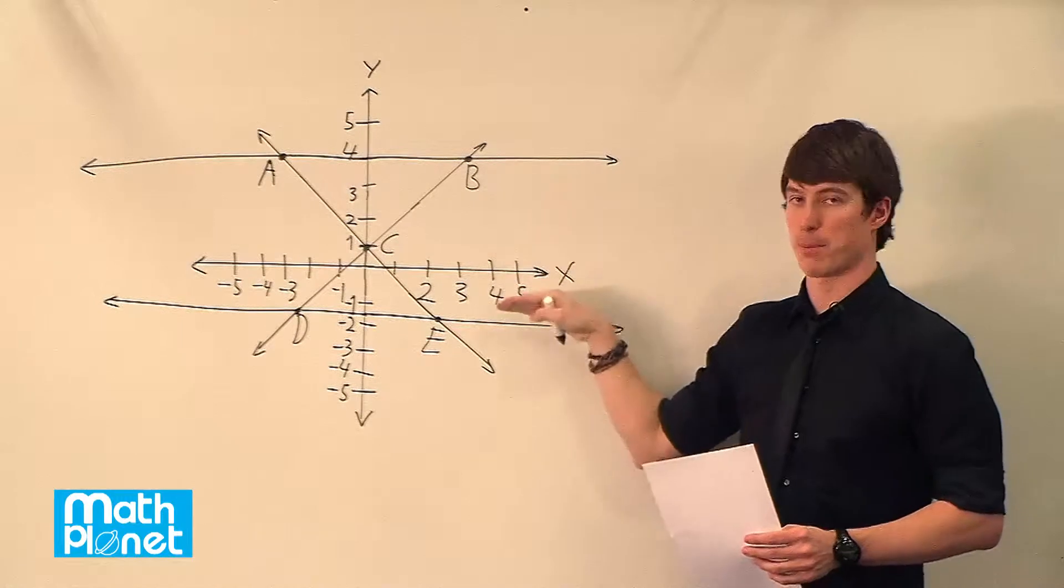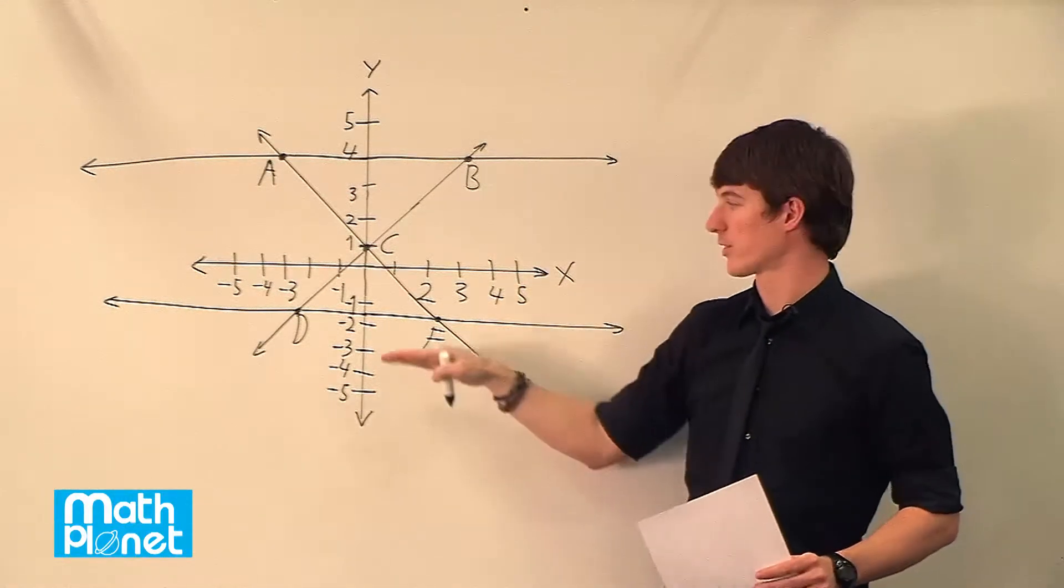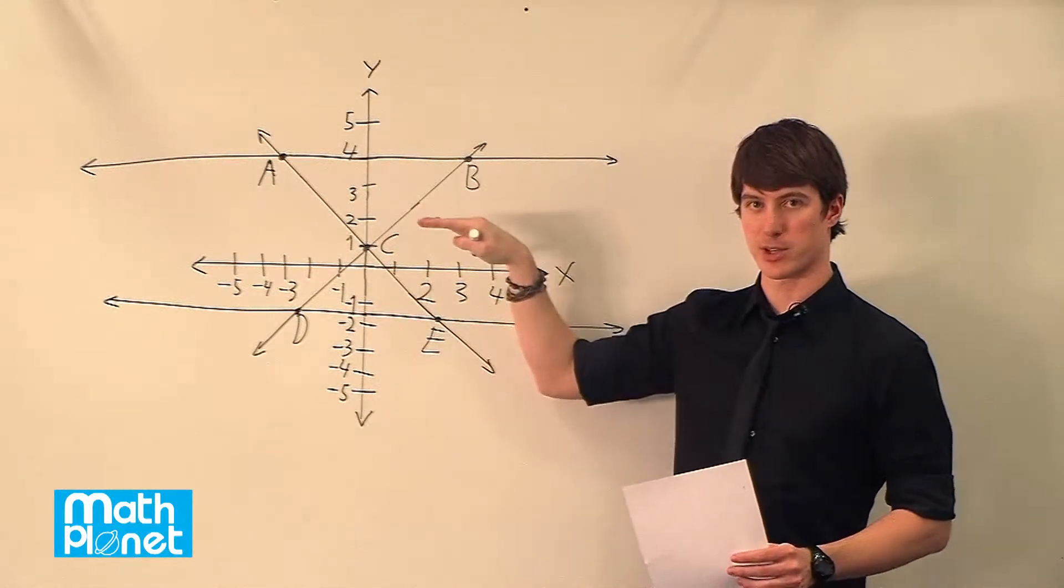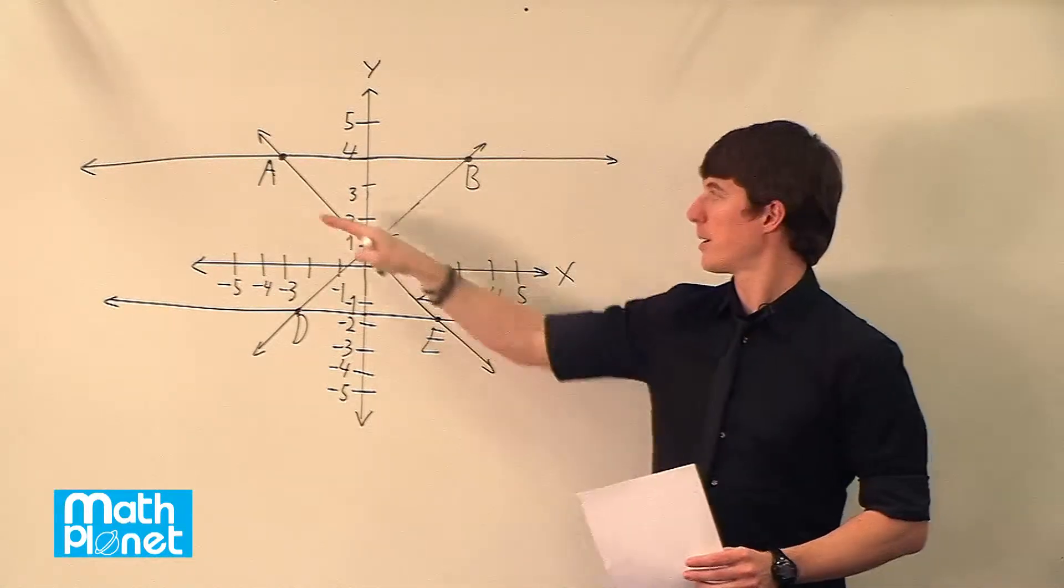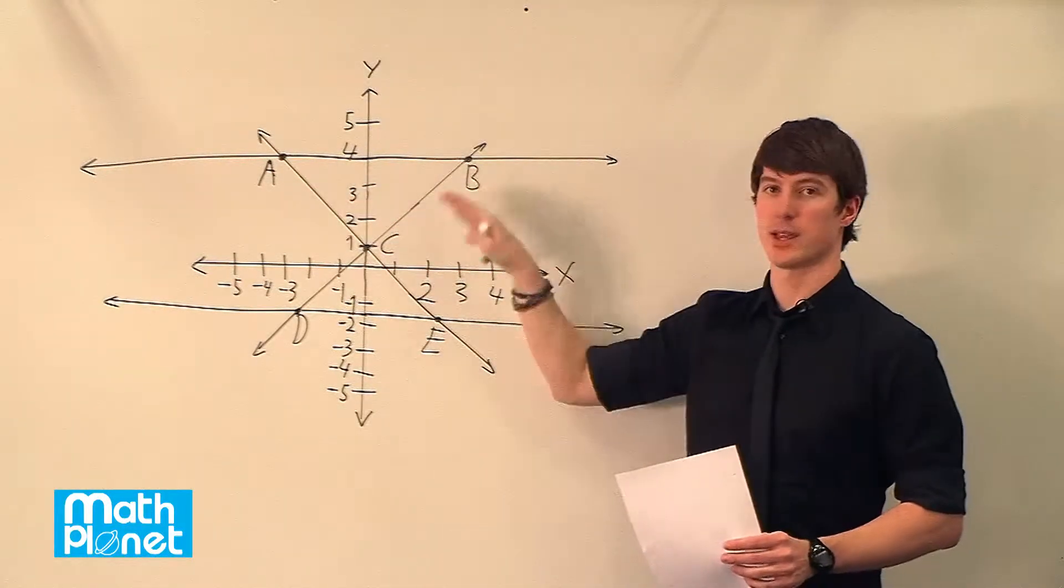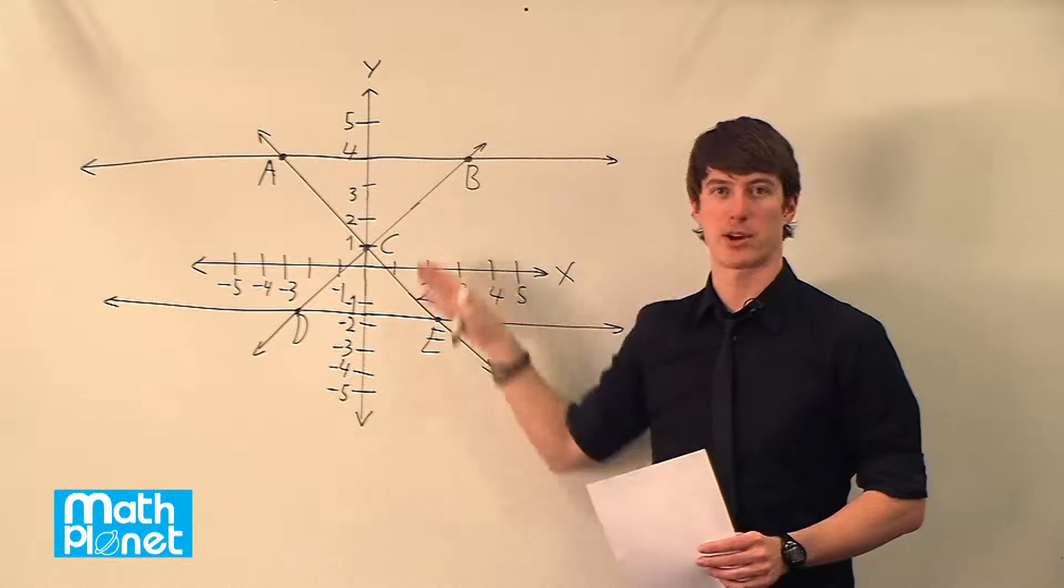So the interesting thing about those is that they're parallel. One could be a little more rigorous and look at the slope of each of these lines and make sure that in fact they're the same slope, but you can see pretty quickly that these AB and DE are basically parallel.